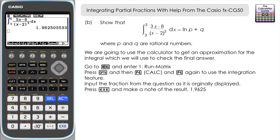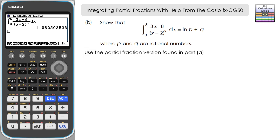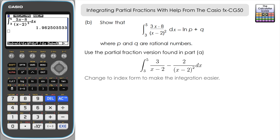Now we proceed with the integration, showing each step. We substitute the original fraction with the partial fraction form from part A, giving the integral between 5 and 3 of that expression with respect to x. We then rewrite it in index form to make integration easier: the integral of 3(x − 2)⁻¹ minus 2(x − 2)⁻² with respect to x, evaluated between 5 and 3.